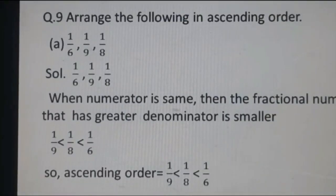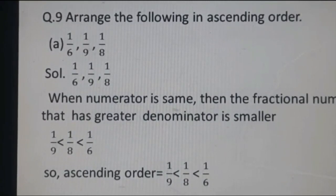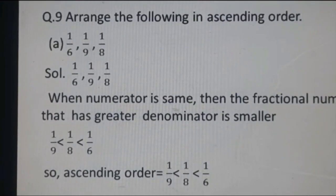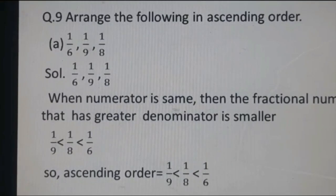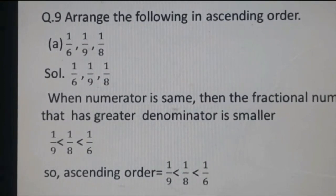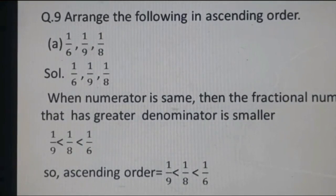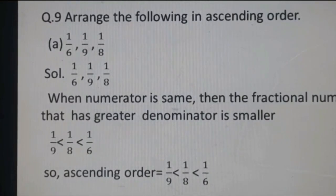Before starting question number 9, do you know ascending order and descending order? Ascending order means smaller to greater — in Hindi, badhe karam, chote se bada likhna. Descending order means bigger to smaller — bade se chote mein likhna, ghatte karam. In previous chapters we did ascending and descending order for whole numbers; now we will do it for fractional numbers.